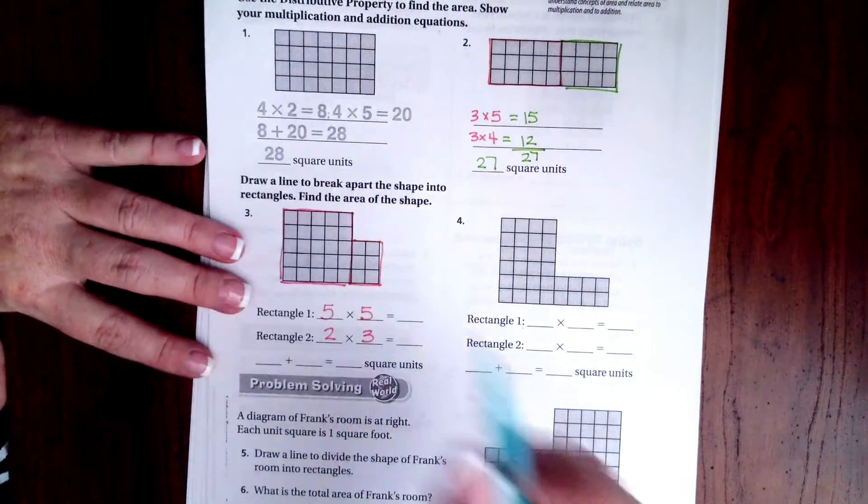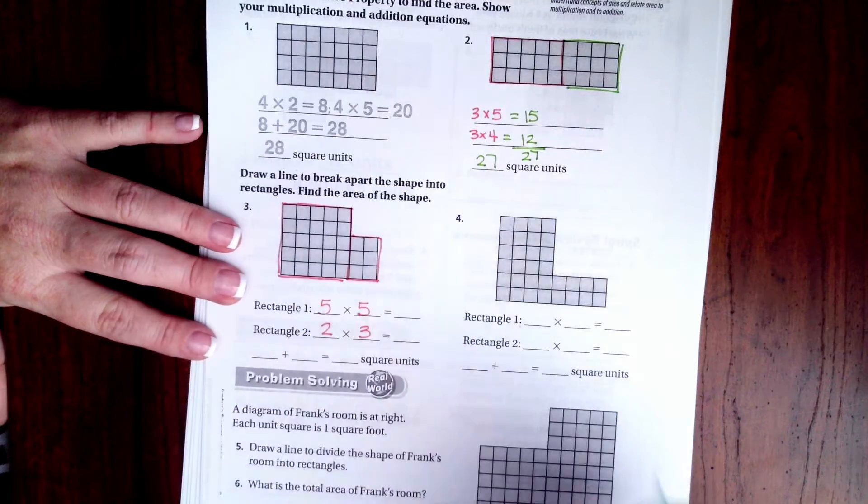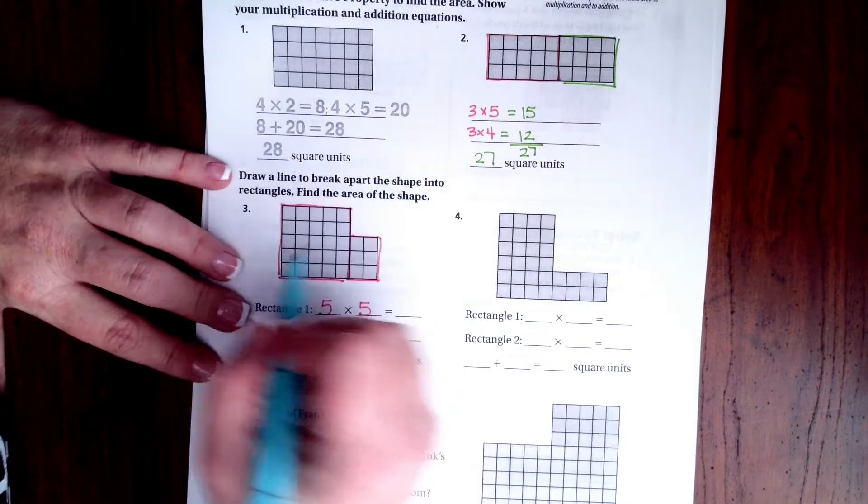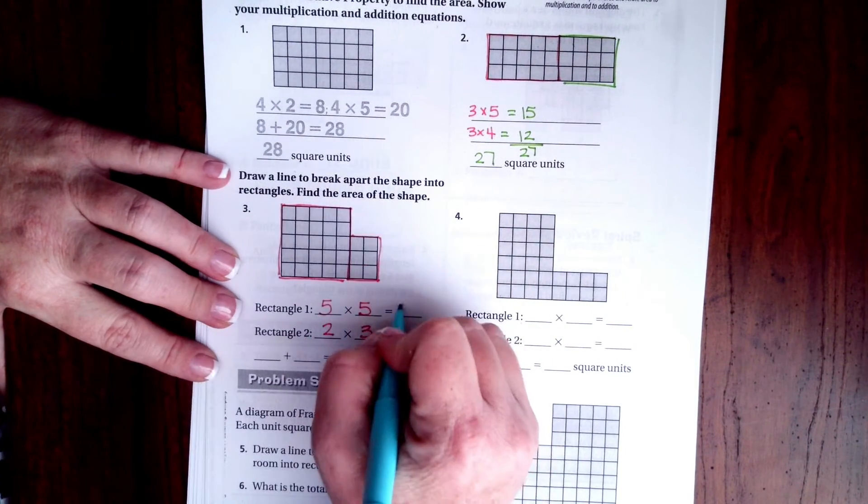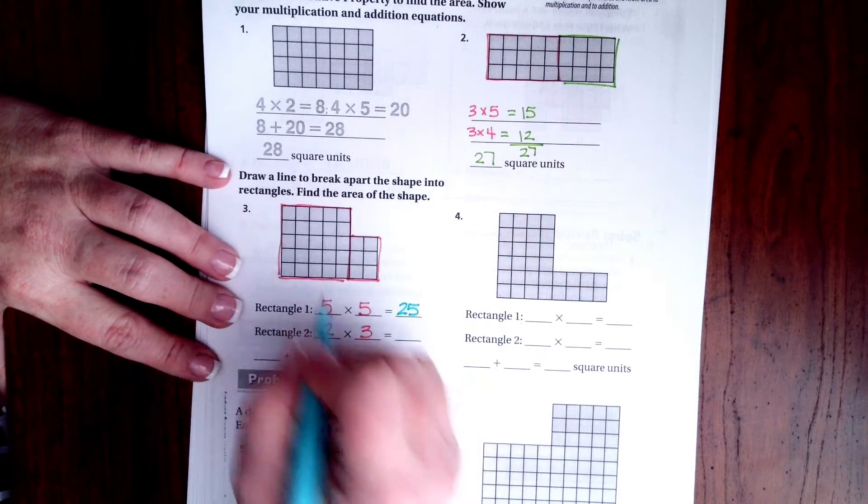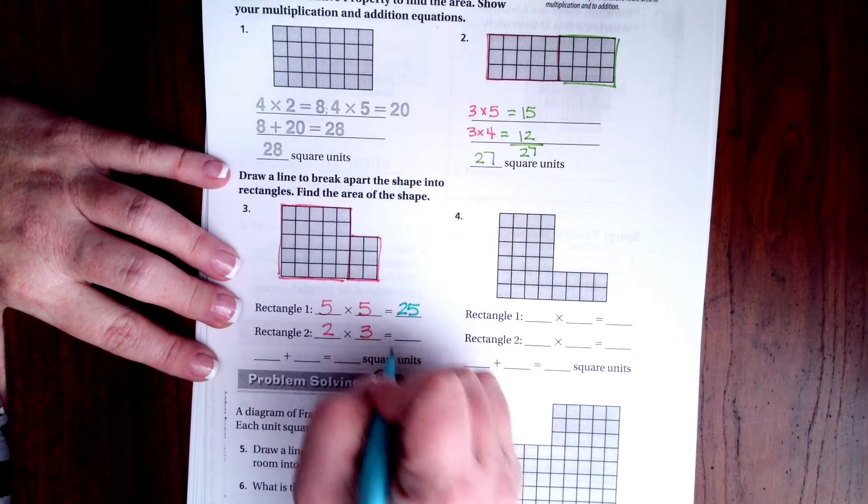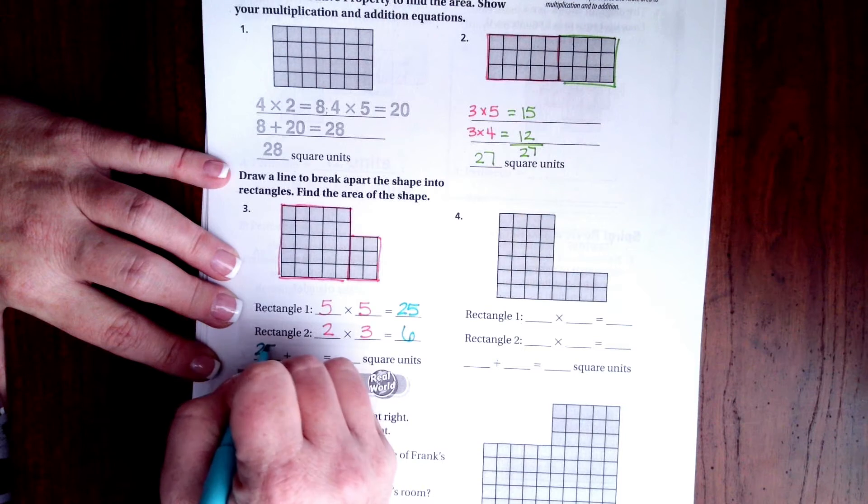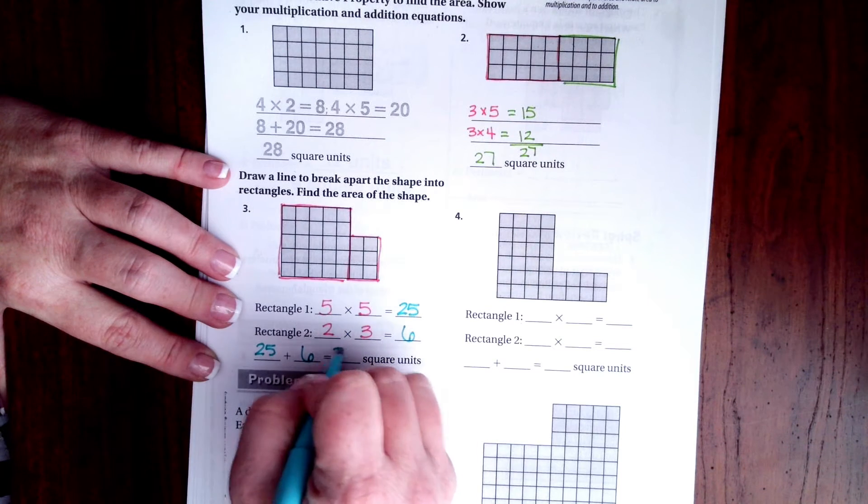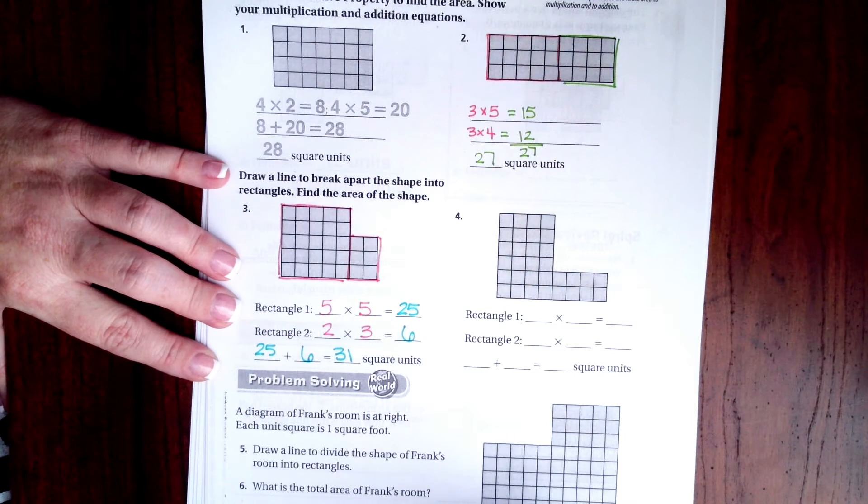We're going to try that one more time. This one, it's oddly shaped. So we're going to break it up into 5 by 5, which is 25, and then 2 times 3, which is 6. So when I add those two together, 25 and 6, I get 31.